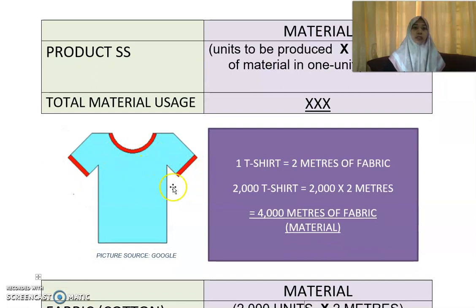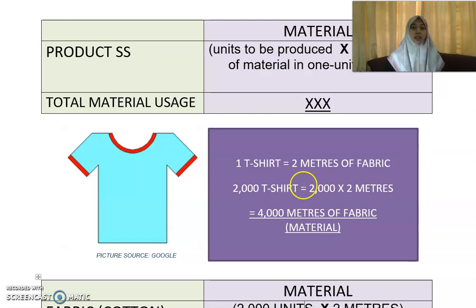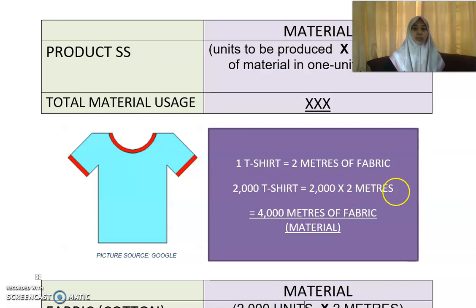Let's go back to our example. Assuming you want to produce a t-shirt — how many units do you need to produce? You want to produce 2,000 t-shirts. One shirt will require 2 meters of fabric. If you produce 2,000, so 2,000 t-shirts will be 2,000 times 2 meters. That will be 4,000 meters of fabric — the materials you need to meet this production demand.